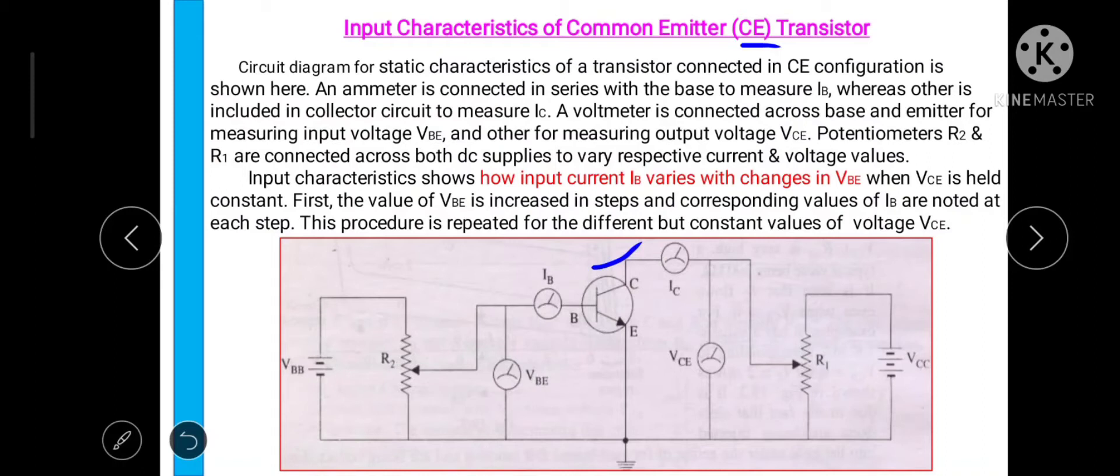Towards its left side the current meter IB is connected to measure the current and voltage VBE is connected to measure the voltage between base and emitter. On its right side the current meter IC is connected to measure the collector current. Whereas the volt meter VCE is connected to measure the voltage between collector and emitter.